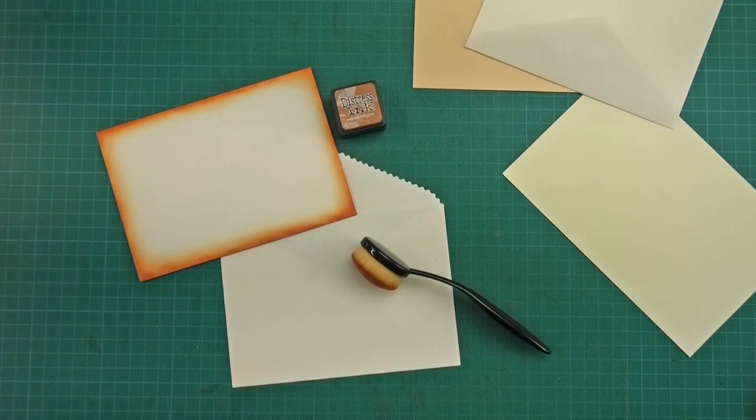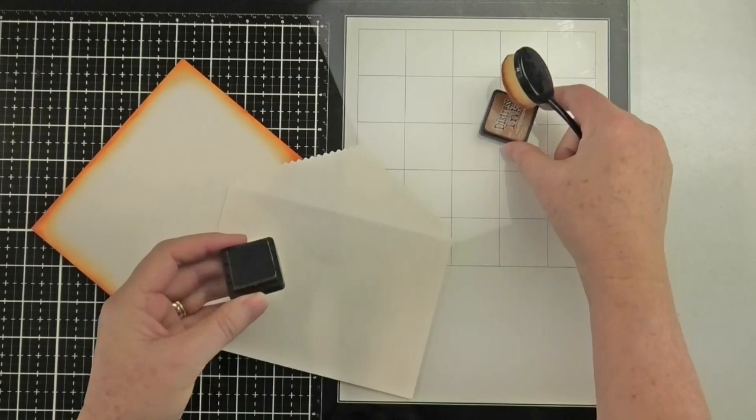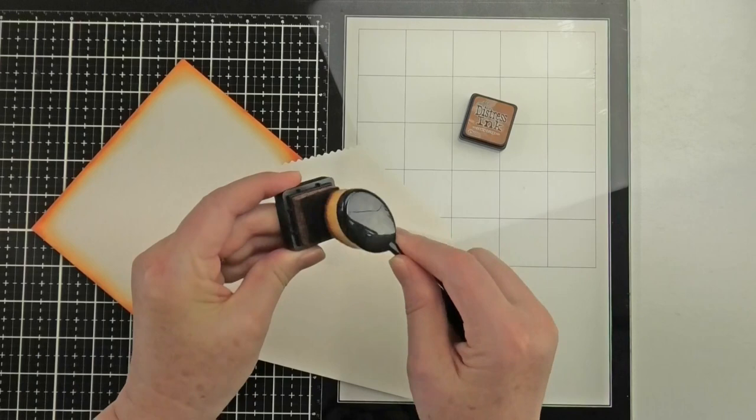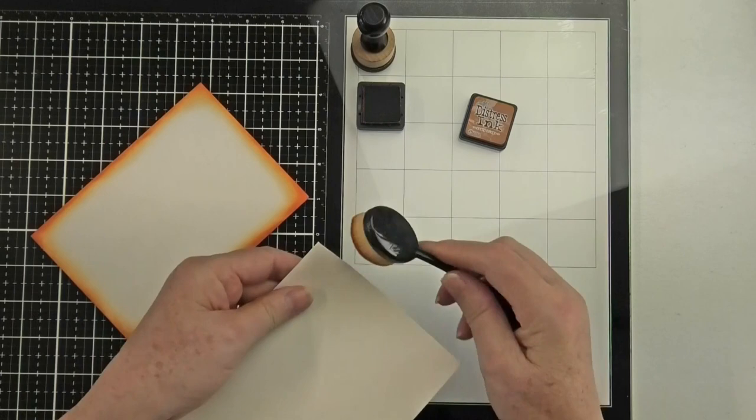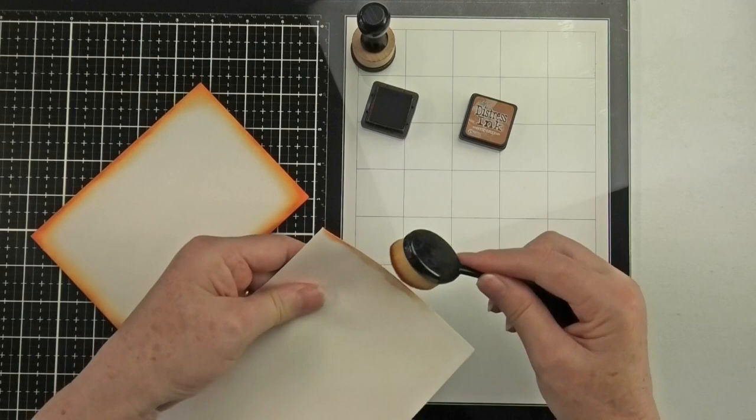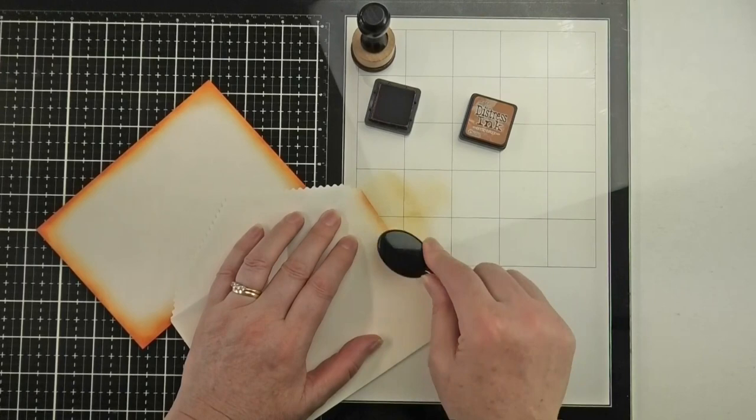I'm just going to use the rusty hinge for the color and I start off by loading up my brush. Now I'm using the makeup brush. You can use a blending brush if you prefer. So I start off by getting my edges nice and dark first, and while it's wet, that is when I start to go off the board and onto the envelope.